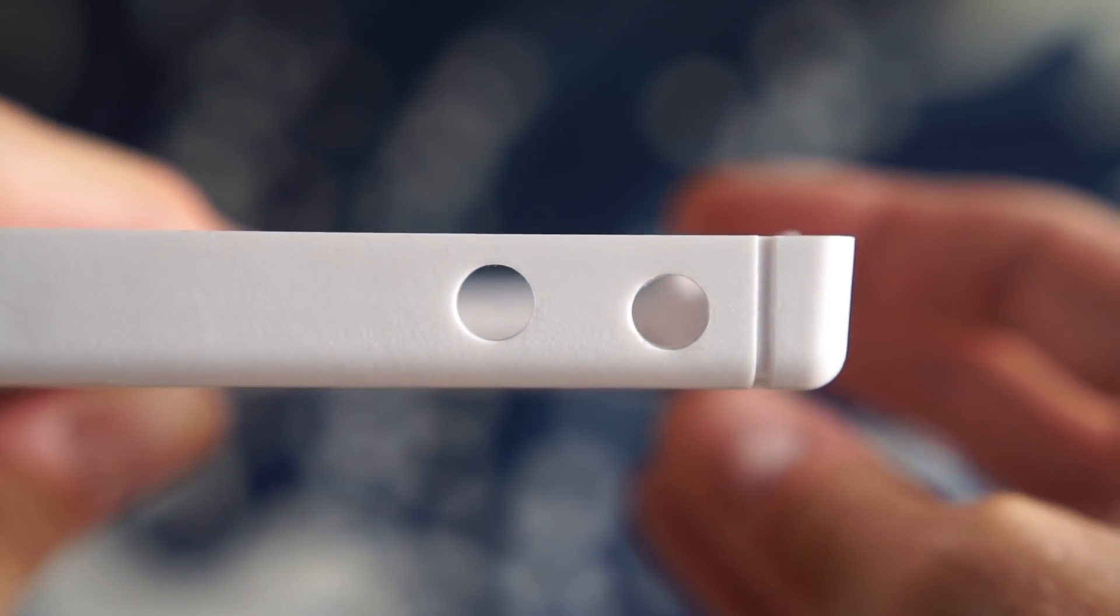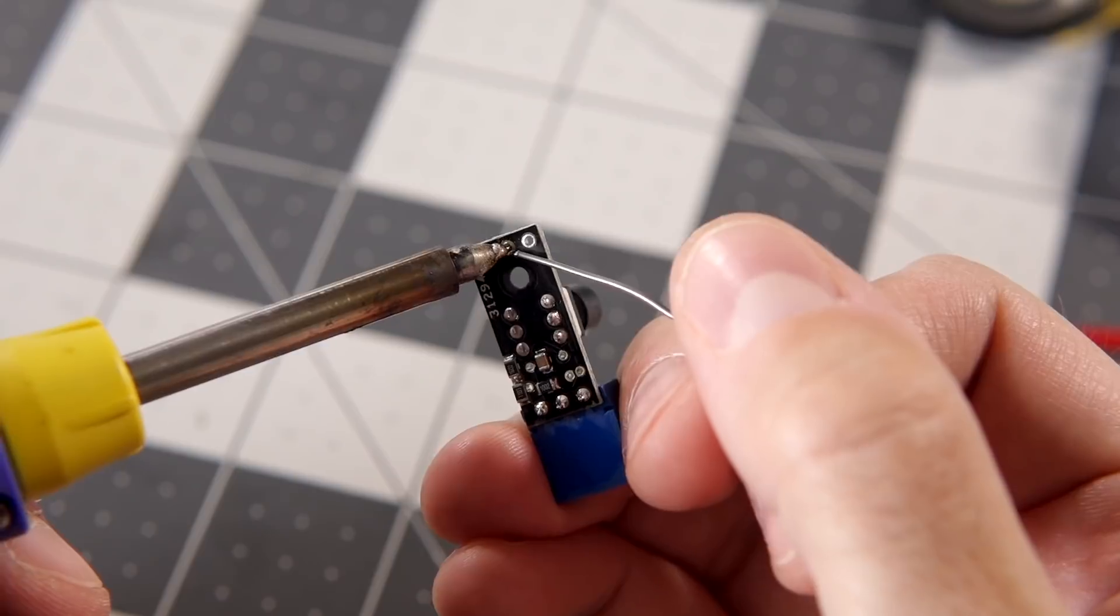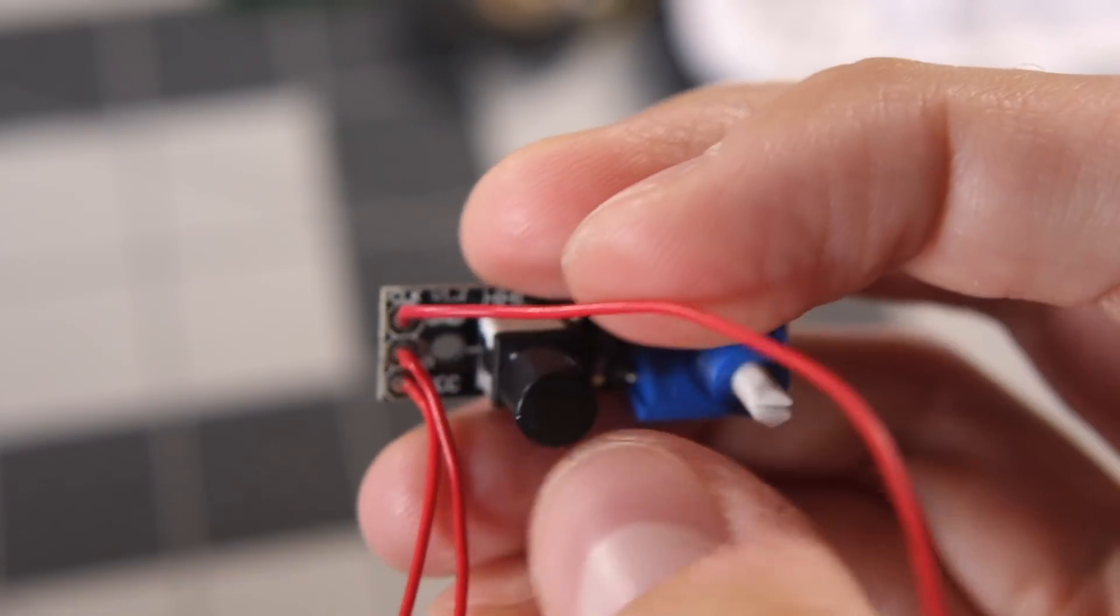Yes, I realize I drilled them a little crooked, but in the end, that's no big deal. Okay, now some electrical stuff. I tinned the through holes in the clock module, then soldered in the three wires.